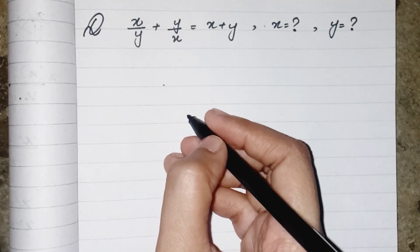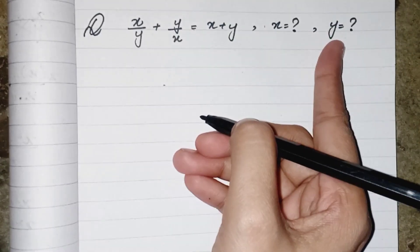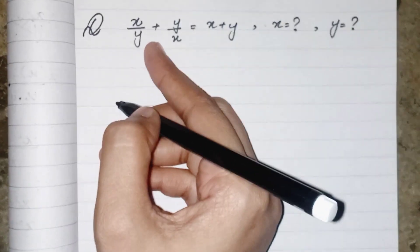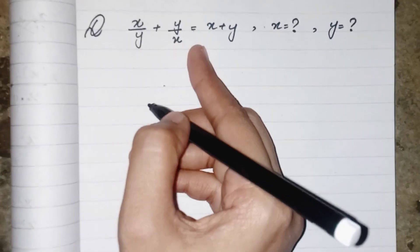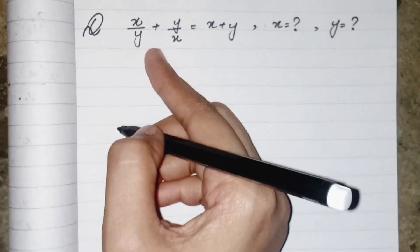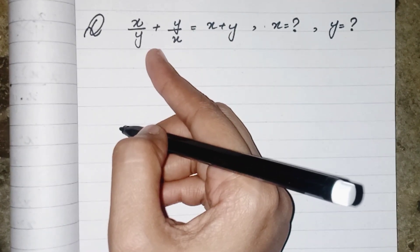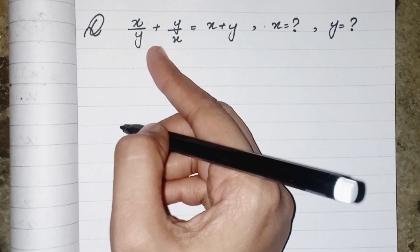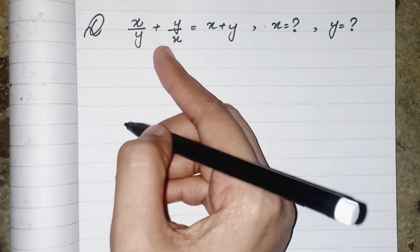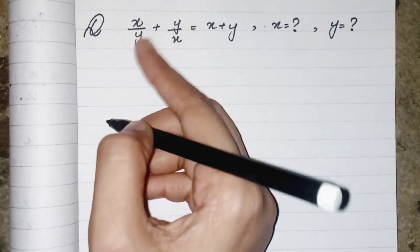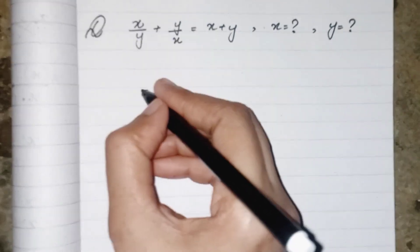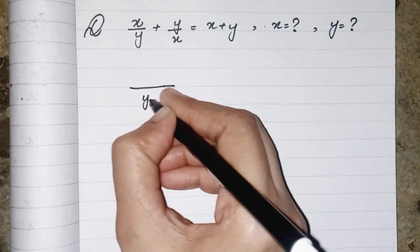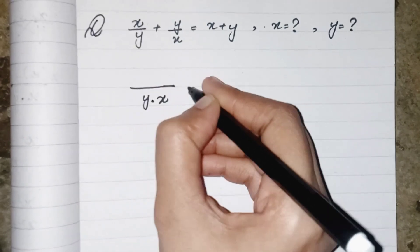Hi everyone. In today's question we have to find the value of x and y, where the equation is x upon y plus y upon x equals to x plus y. We have fractions on one side of the equals sign, and whenever we have fractions we take the LCM. Since both denominators are variables, they will be multiplied by each other, giving us y multiplied by x.